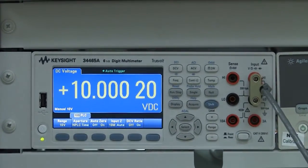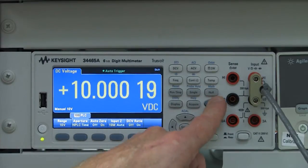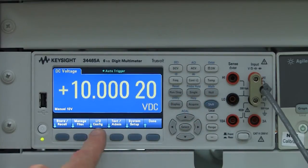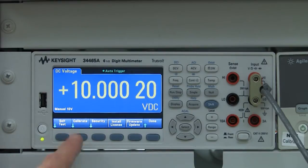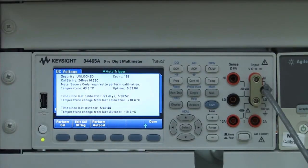Earlier in the video, I had started an auto calibration by pressing the shift followed by the up arrow key. You can also activate the auto calibration by pressing shift, utility, test admin, calibrate.